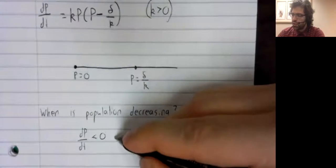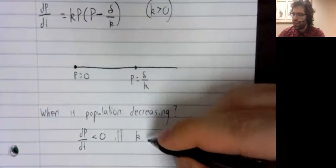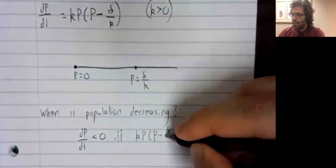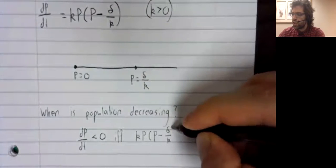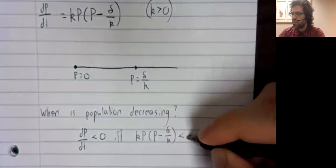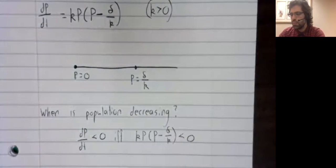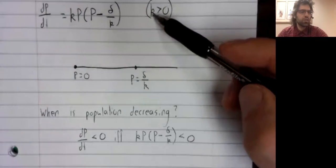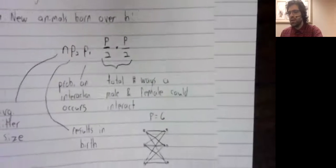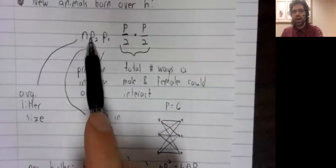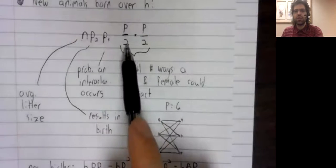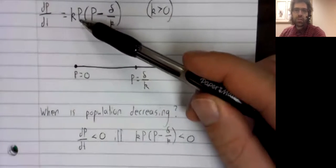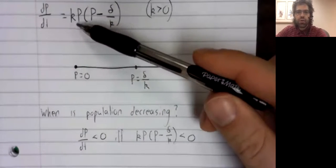So it's decreasing if and only if this expression is less than zero. K is a positive constant. K came from multiplying a bunch of positive terms together, and certainly the population is never negative.